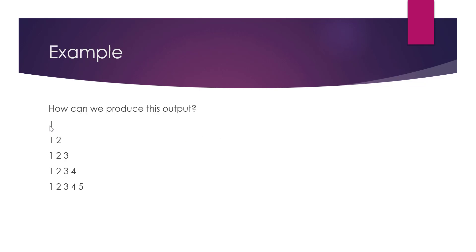To make this clearer, let's look at an example. We want to print five lines: the first line prints '1', the second prints '1 2', the third prints '1 2 3', the fourth prints '1 2 3 4', and the fifth prints '1 2 3 4 5'. Since we are printing five lines, that repeating operation becomes our outer loop, and printing the numbers within each line becomes our inner loop.